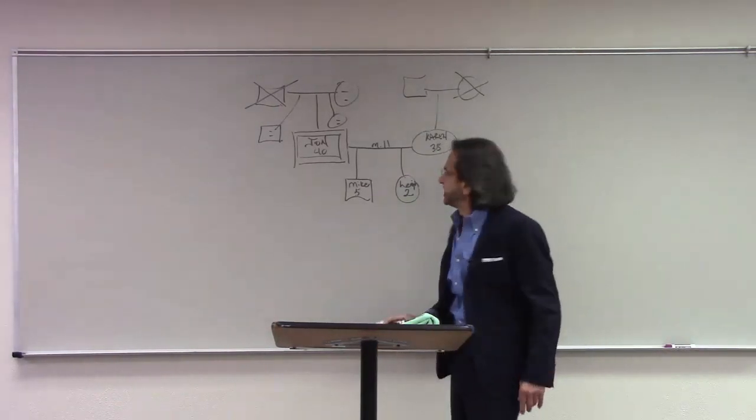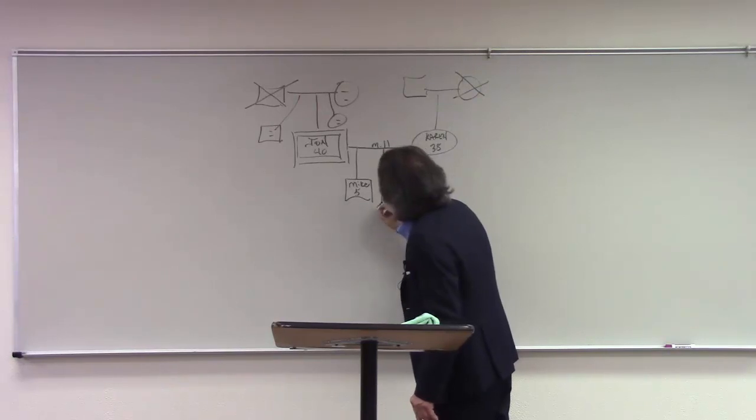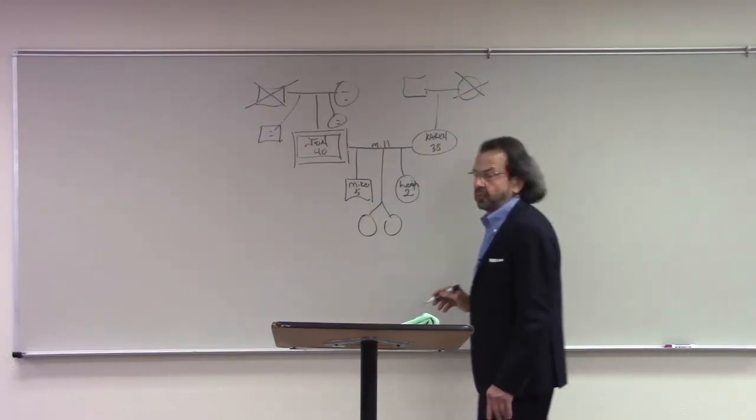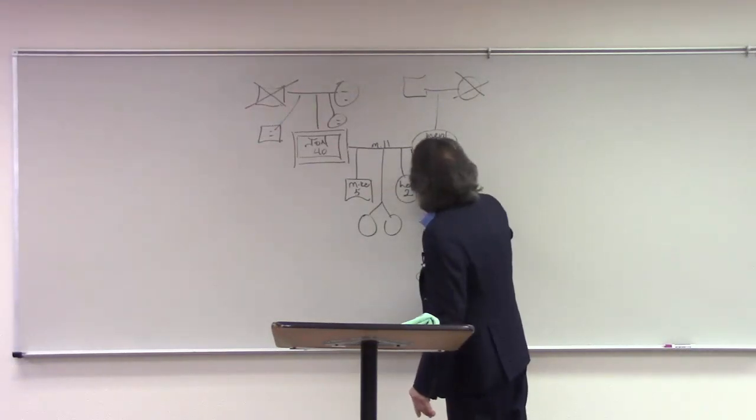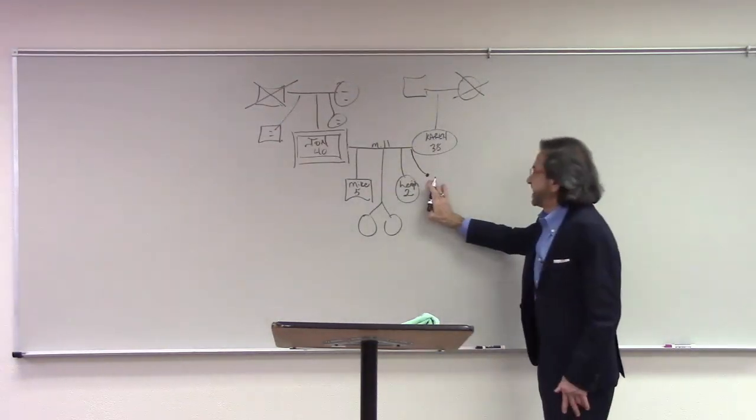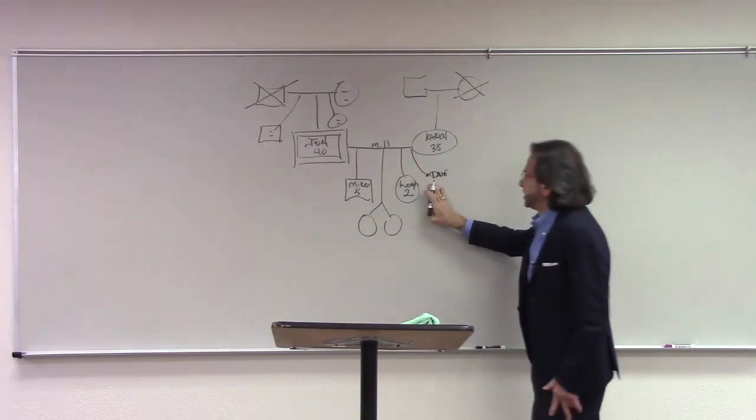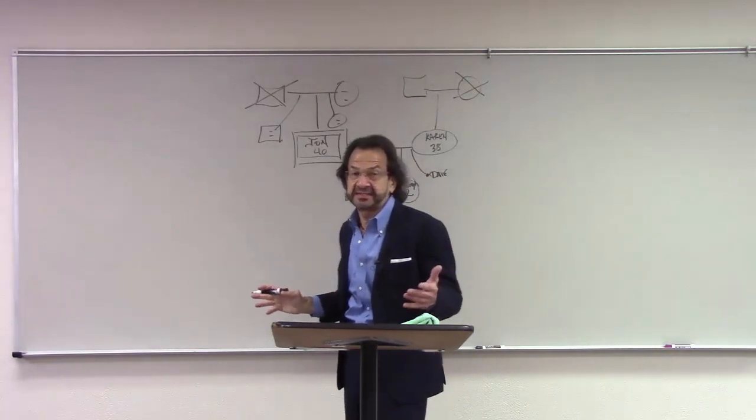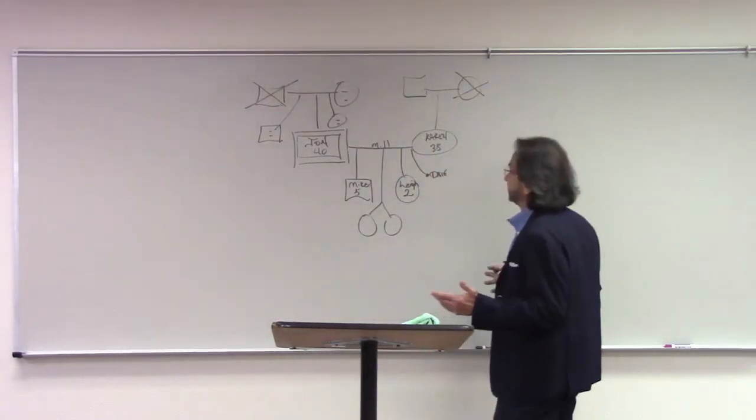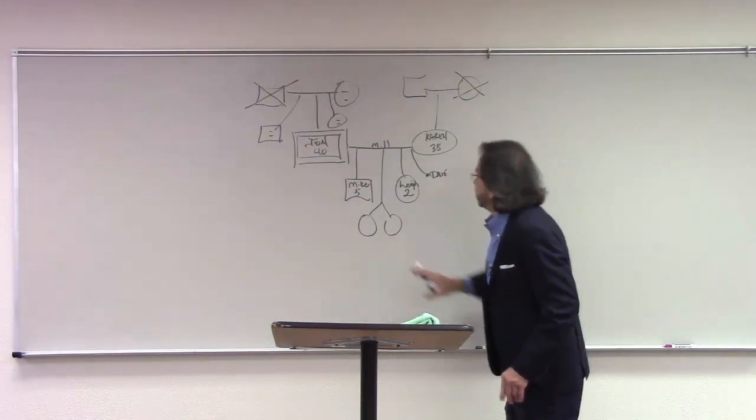To show twins, for instance, that could be shown with a Y. Those are twins. To show a miscarriage or an abortion, that is generally shown like that. And you can add a date there if you like. We like to put those on and we ask about those because that is a loss. That is a grieving activity on the part of the marriage or the family.